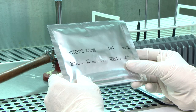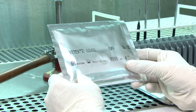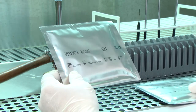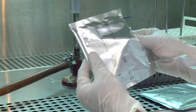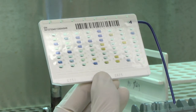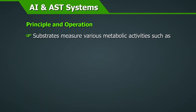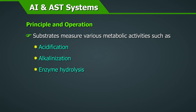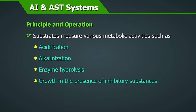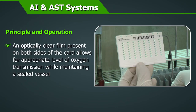Principle and Operation: The Vitek 2 system uses plastic reagent cards that contain microlitre quantities of antibiotics and test media in a 64-well format. Each well contains an individual test substrate. Substrates measure various metabolic activities such as acidification, alkalinization, enzyme hydrolysis, and growth in the presence of inhibitory substances. An optically clear film present on both sides of the card allows for the appropriate level of oxygen transmission while maintaining a sealed vessel.